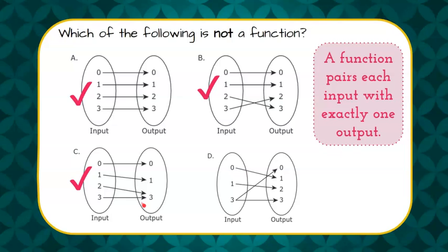Don't be confused. The output 3 is mapped to from two different inputs. That doesn't apply here. We're looking at the inputs. 2 maps to 1, 3 maps to 1. Now let's look at choice D.